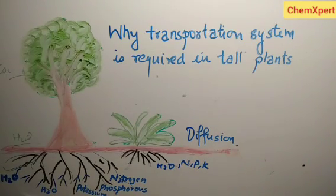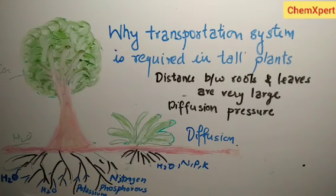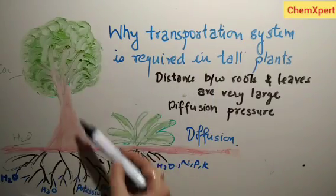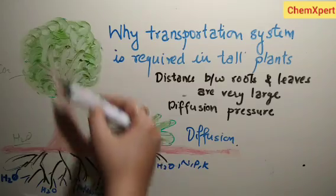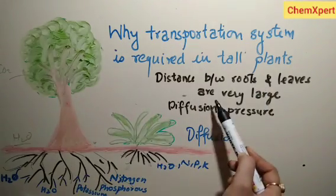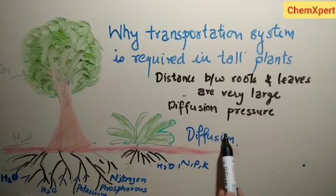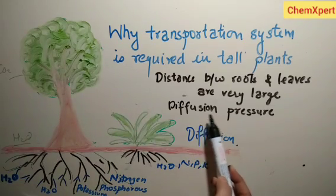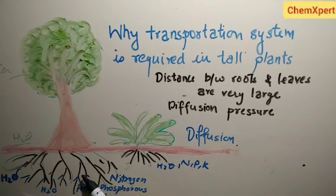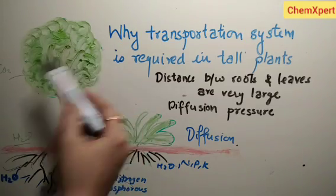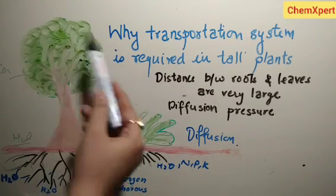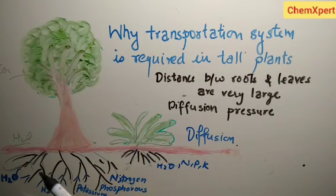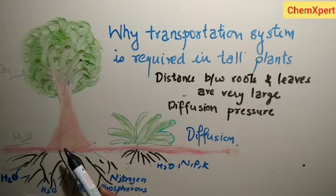The first question is: why is a transportation system required in tall plants? The answer is that when the distance between roots and the leaves is very large — as in the case of tall plants — the diffusion pressure is not sufficient to provide all the raw material to the leaves and energy to the roots. That is why a proper transportation system is required in tall plants.